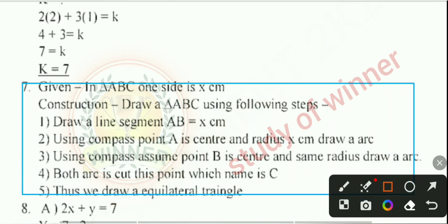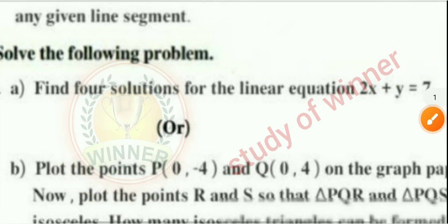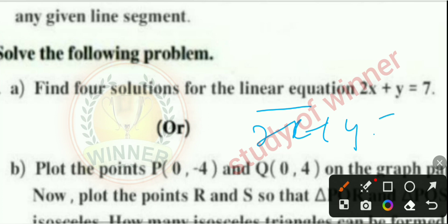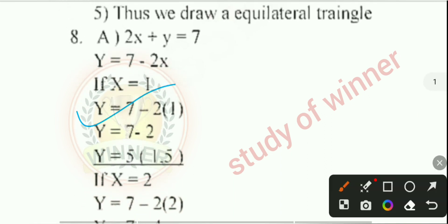Question 8: Find four solutions for the linear equation 2x + y = 7. You can see the first, second, third, and fourth solutions provided in the video.